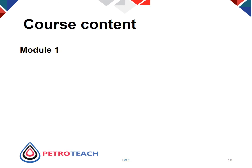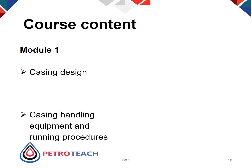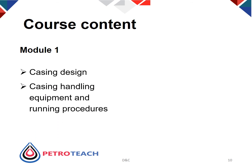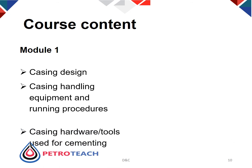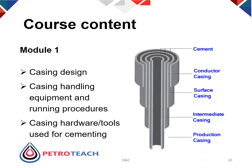The course content is divided into five modules. In module one, we will discuss casing design, including casing properties and casing string. We'll talk about casing handling equipment and running procedures, including the rig equipment, makeup procedures and running speed. Casing hardware and tools used for cementing, including centralizers and scratchers, guides, floats and stage tools will be discussed.